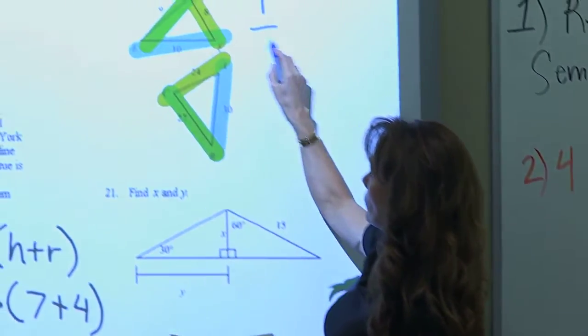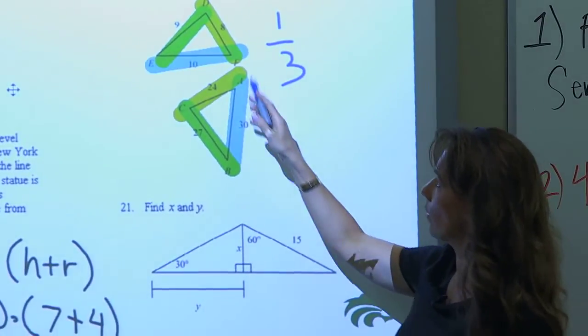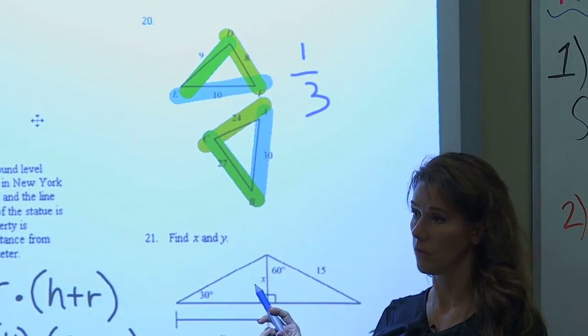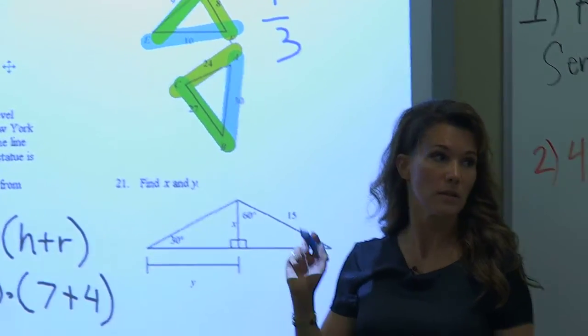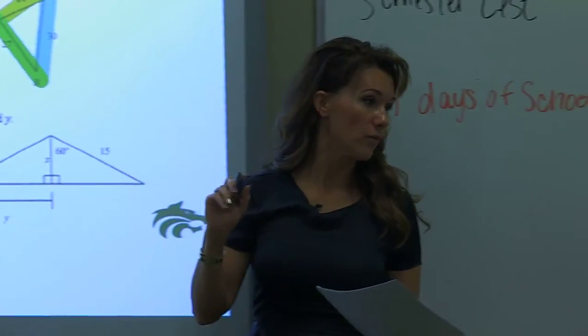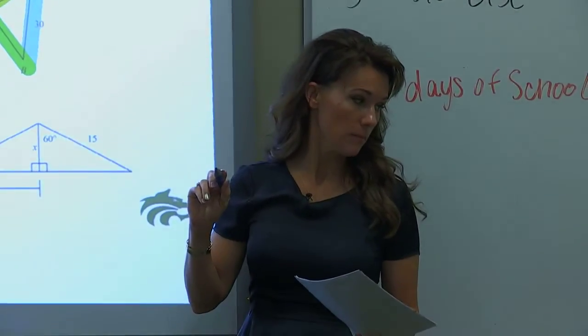Okay, it should be 1 to 3, for the top to the bottom. Alright, how do I know they're similar? What? All three of them are the same. All three of what? All three of the ratios are the same.